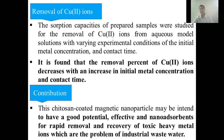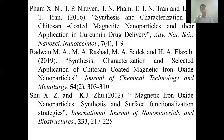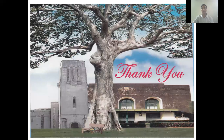The absorption capacity of the sample was studied for removal of cobalt ion from model solution under experimental conditions of initial concentration and contact time. It is found that removal percent of cobalt ion decreased with increased initial concentration and contact time. The chitosan-coated magnetite nanoparticles may have good potential as a nanoabsorbent for rapid removal and recovery of toxic heavy metal ions in industrial wastewater. These are some references for the presentation. Thank you for your attention.